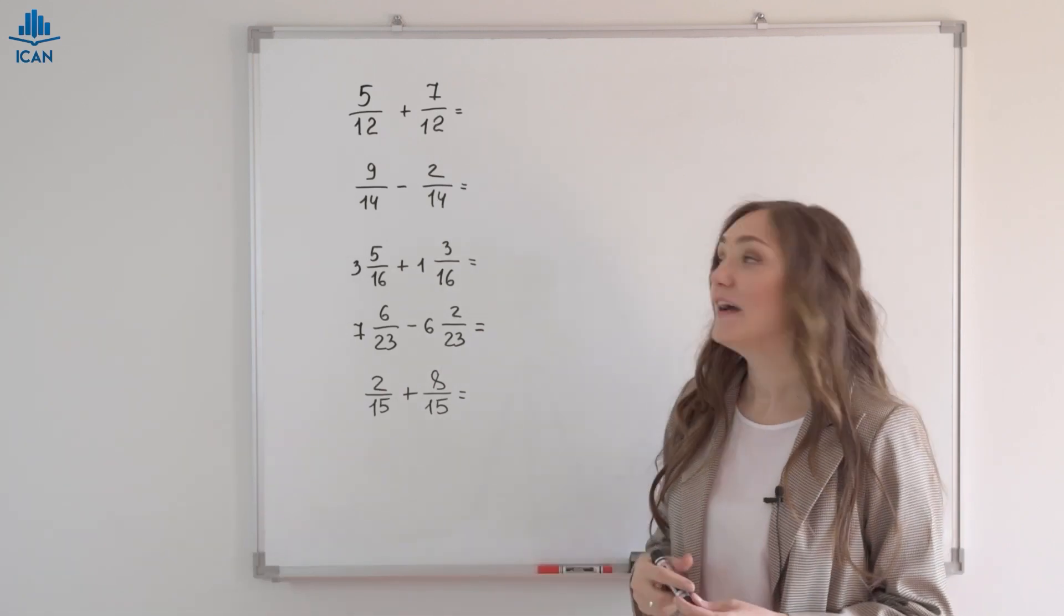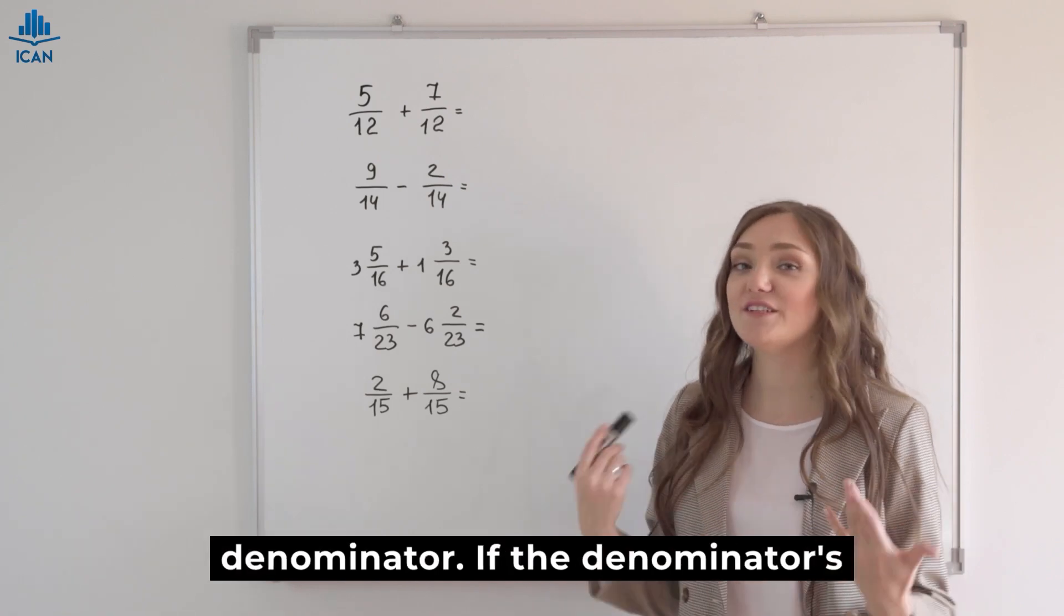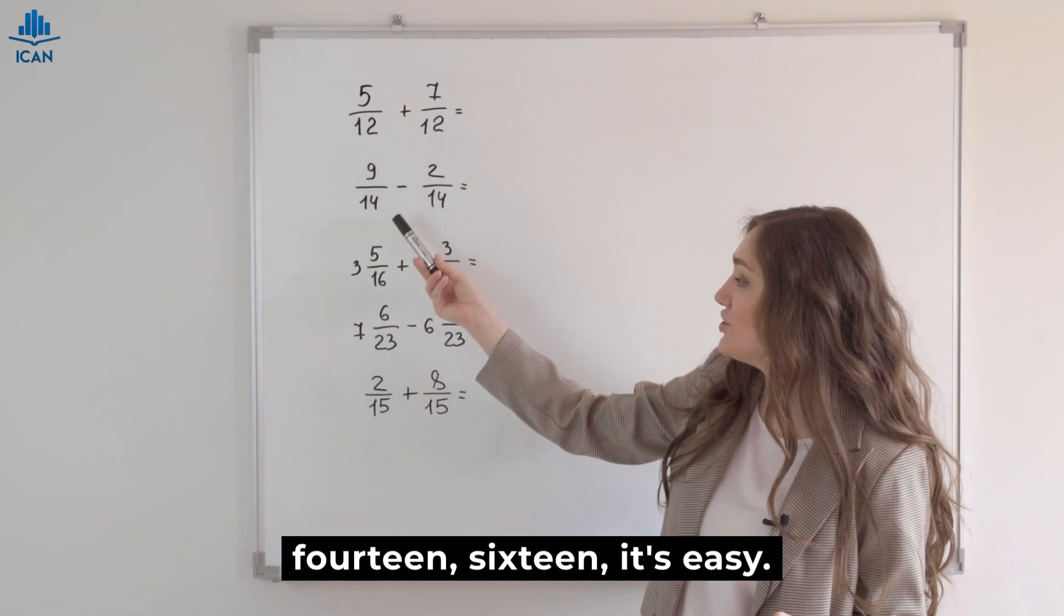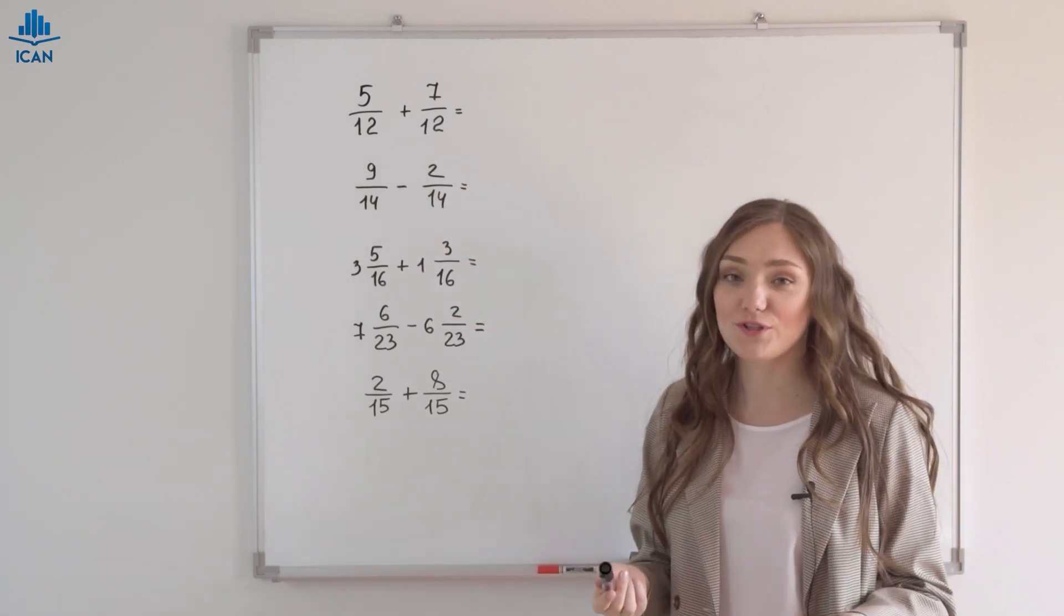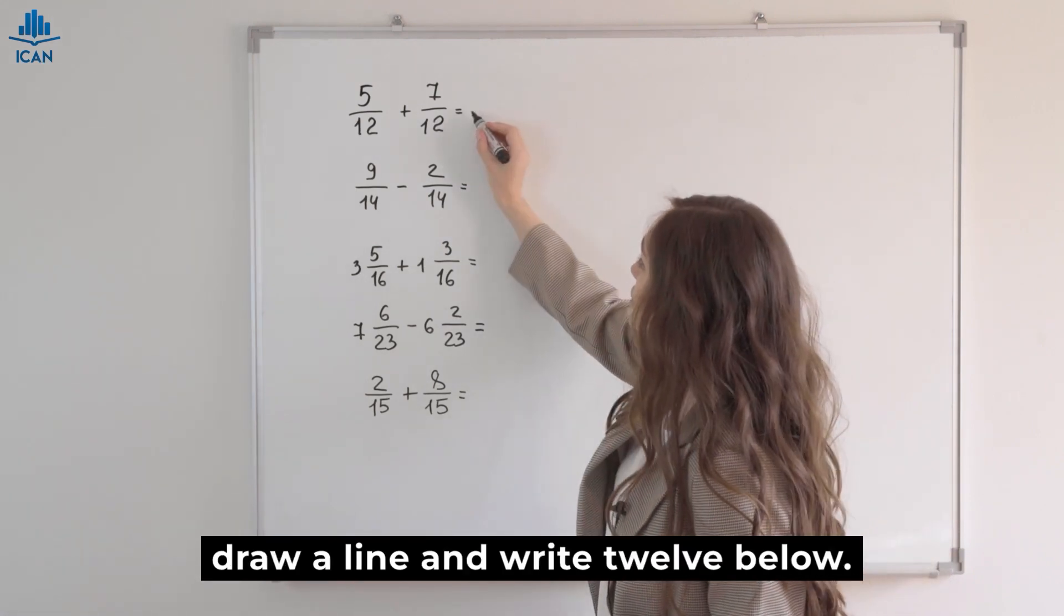Let's start with these five. How do we work with fractions? We have a numerator and a denominator. If the denominator is the same, like 12, 14, 16, it's easy. We don't need to find a common denominator, just draw a line and write 12 below.